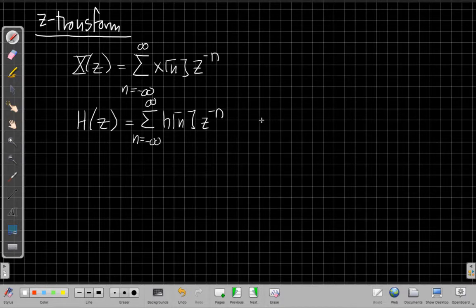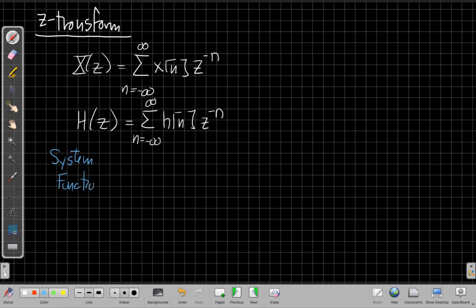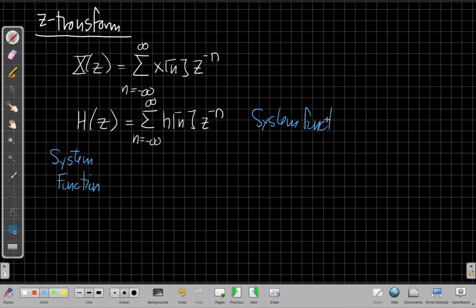And so in fact, we now have a name - we'll call this thing on the left-hand side the system function, and this is a generalization of the frequency response. We often say the system function H(z) is the Z-transform of the impulse response.